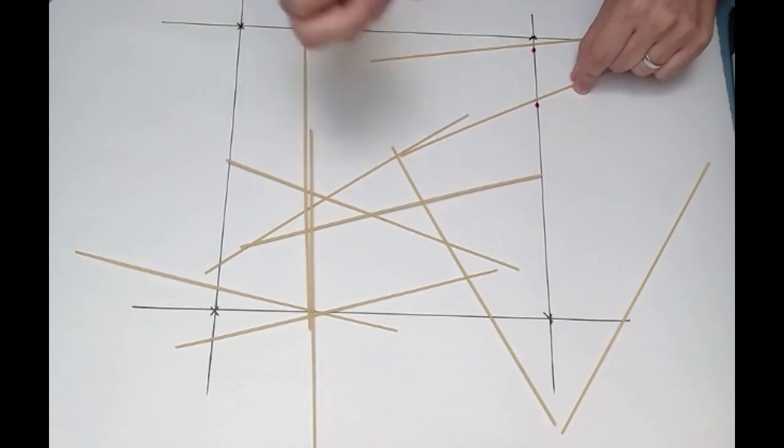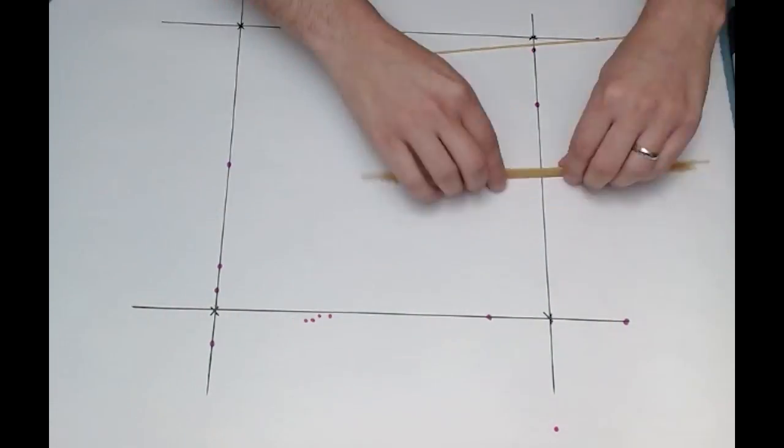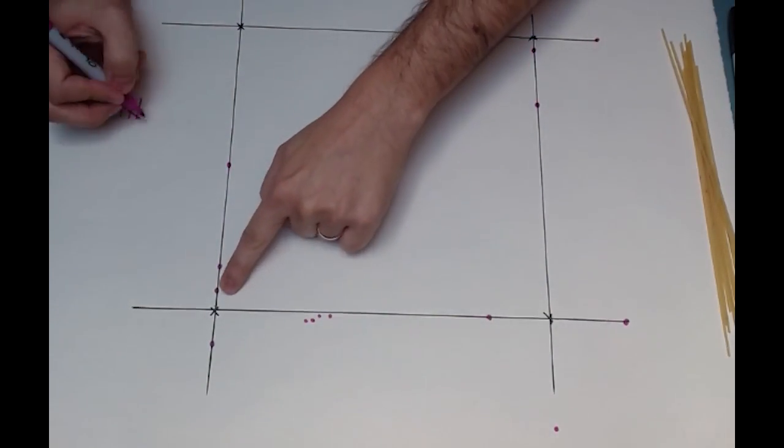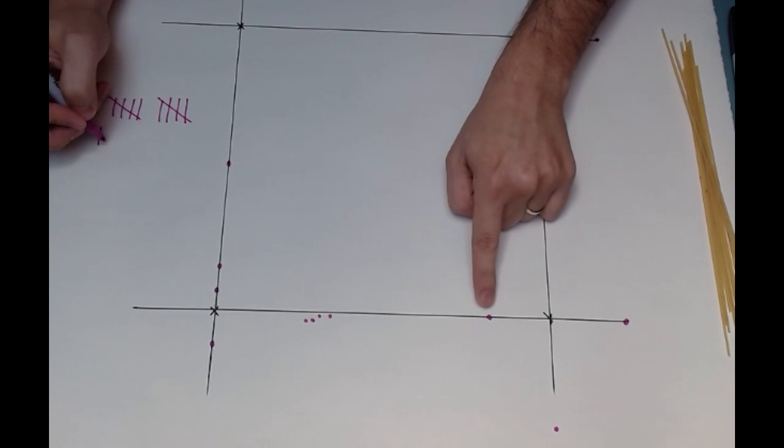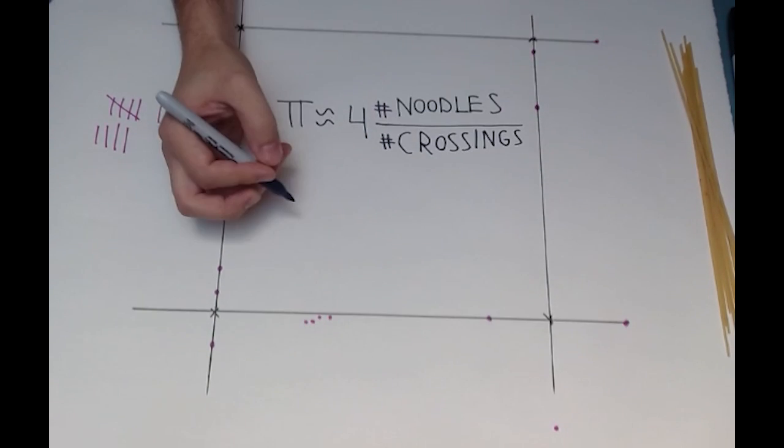Now, we need to count up the number of times the spaghetti crossed one of the grid lines. In my case, I counted 14 crossings. Finally, the formula to estimate pi is this. Pi is approximately four times the number of noodles divided by the number of crossings.